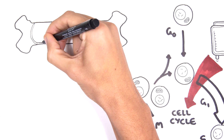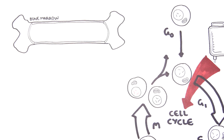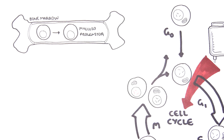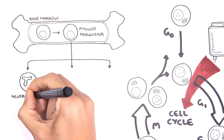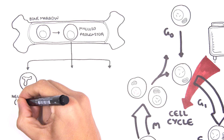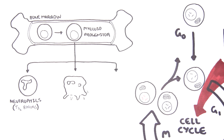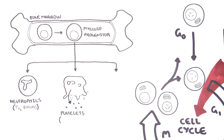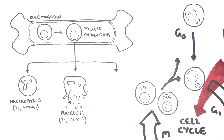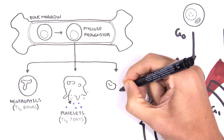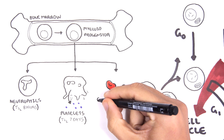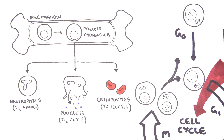Probably the most important acute side effect of chemotherapy agents is its effect on bone marrow. The pluripotent stem cell can become a myeloid progenitor cell, which can make several important cell types. Neutrophils are acute immune cells for acute inflammation, with a very short half-life of about eight hours. The myeloid progenitor cell can also become a megakaryocyte and release platelets — important for initiating the clotting cascade — with a half-life of about seven days. Finally, it can become red blood cells, erythrocytes, which carry oxygen throughout the body and have a lifespan of about 120 days.